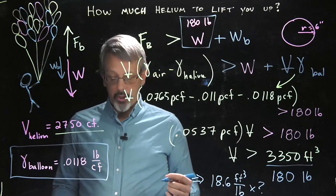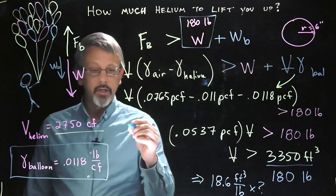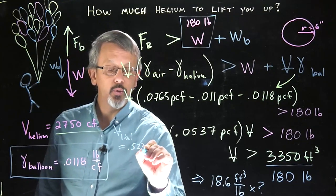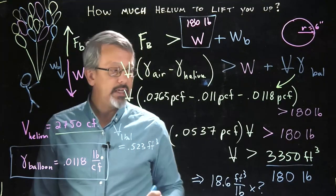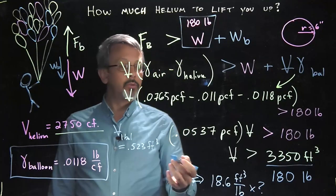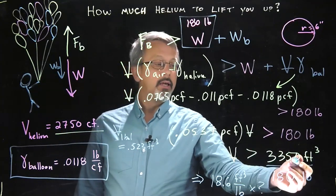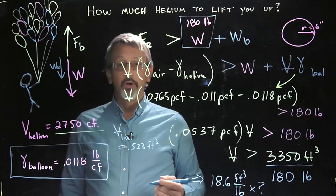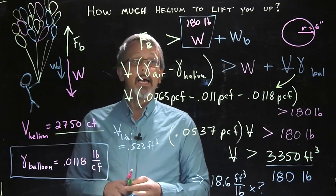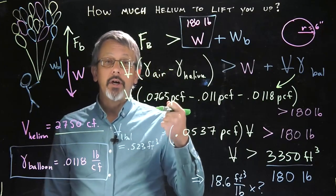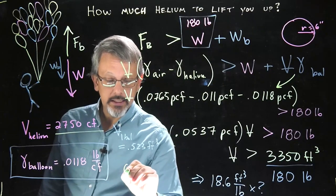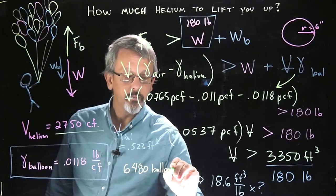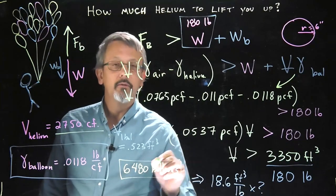Well, we know our relationship. We know that each balloon filled approximately the volume of one balloon was equal to 0.523 cubic feet. So if we try to figure out how many balloons, we simply take this 3350 and divide it by the 0.523. That's approximately multiplying it by 2, but if we actually do it in a calculation in this case, to lift my weight of 180 pounds, I would need 6,480 balloons filled with helium.